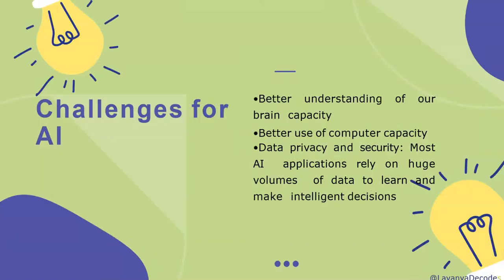The Turing test was introduced in Turing's 1950 paper on computing, machinery and intelligence, which considered the question: can machines think? It is basically for better understanding of brain capacity, computer capacity, data privacy and security. In most AI applications, they rely on huge volumes of data to learn and make intelligent decisions. The Turing test is based on a party game called the imitation game, with some modifications. This game involves three players, one of whom is a computer and another is a human respondent.